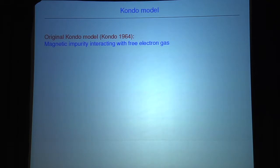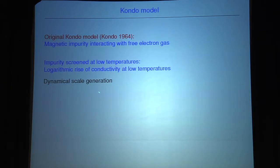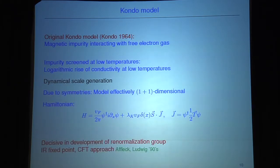In field theory, this model goes back to Kondo in 1964, where he studied a magnetic impurity interacting with a free electron gas. The screening of the impurity at lower temperatures has an experimental signal: a logarithmic rise of the resistivity at low temperatures. There is a dynamical scale generation. Due to the symmetries you can introduce spherical coordinates and effectively have a 1+1 dimensional model.